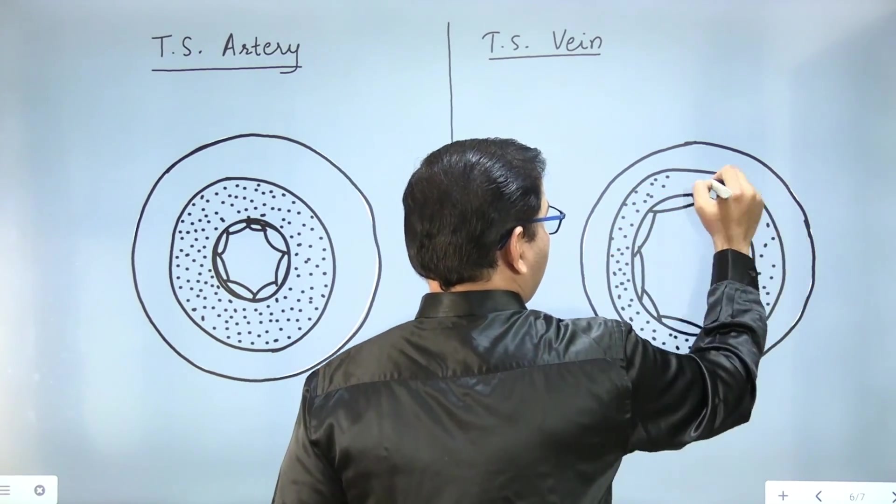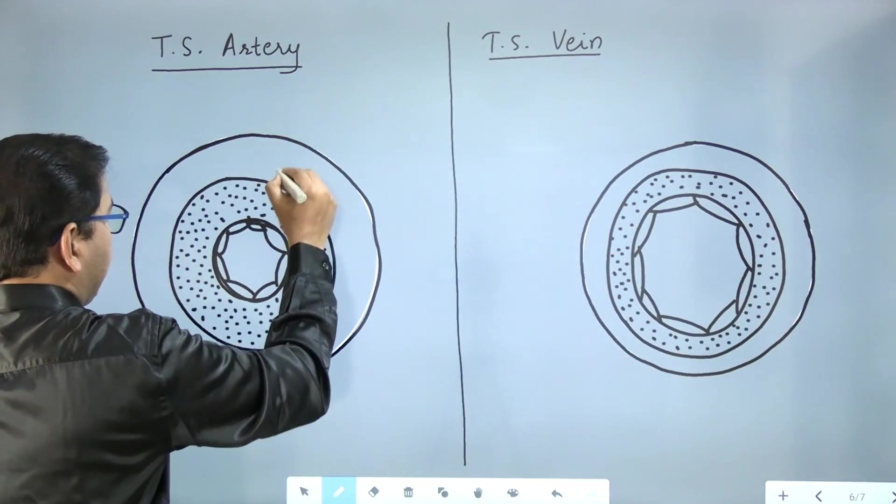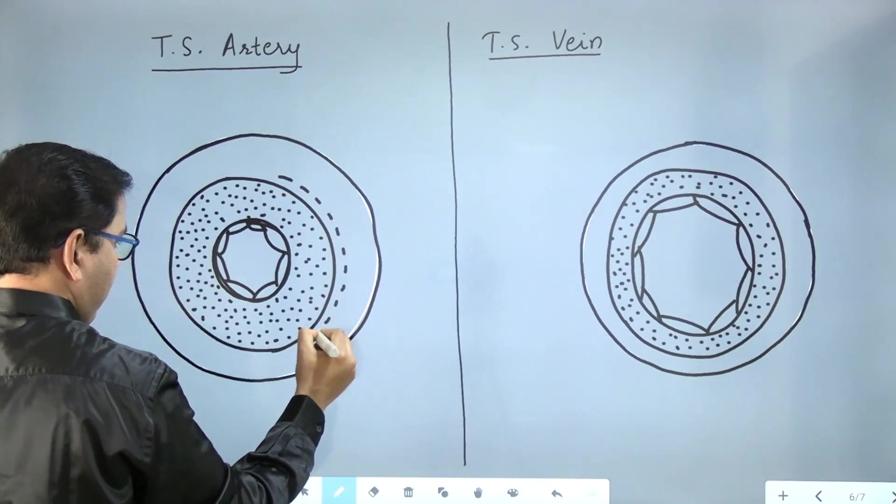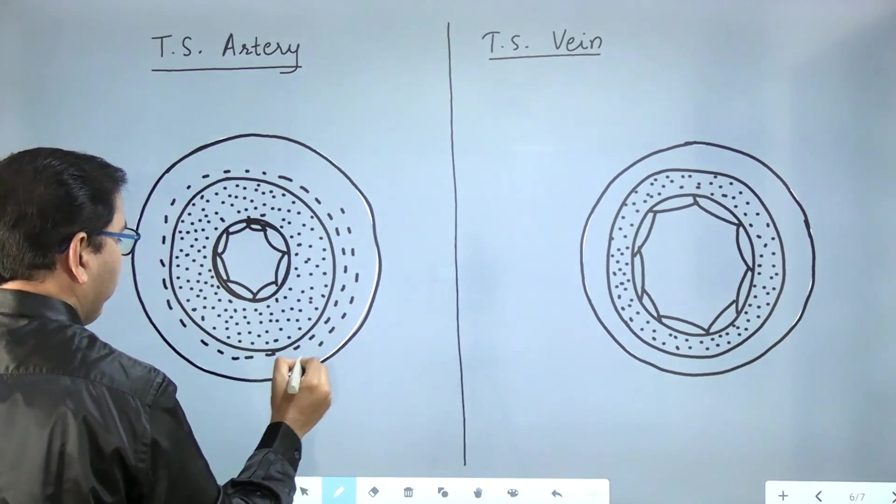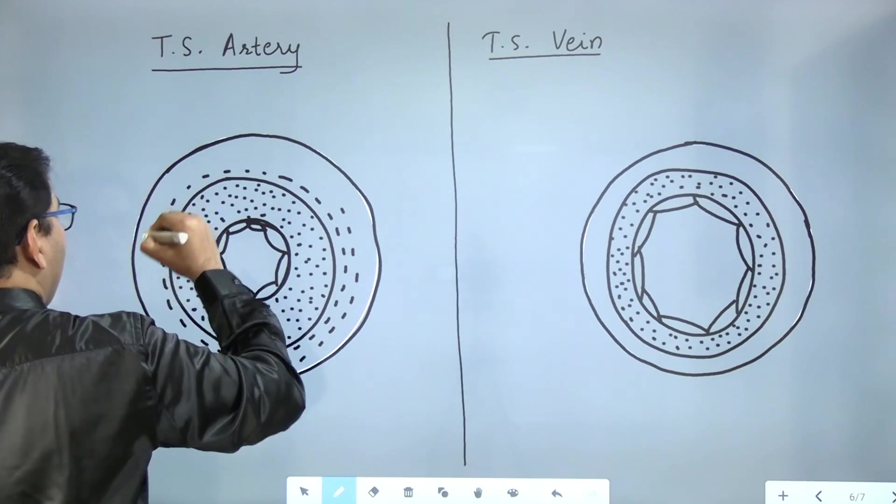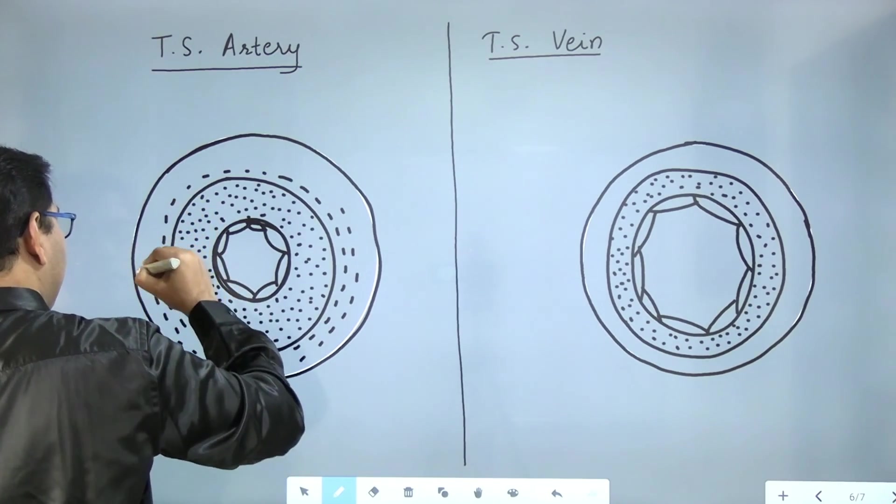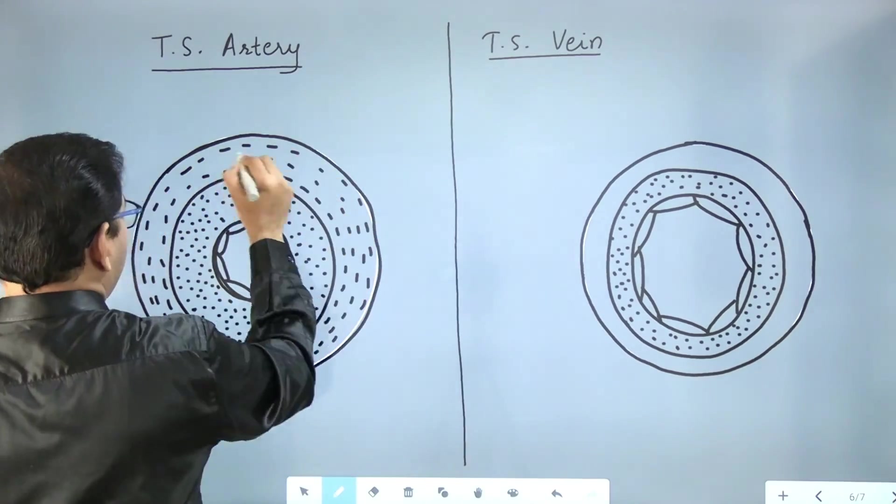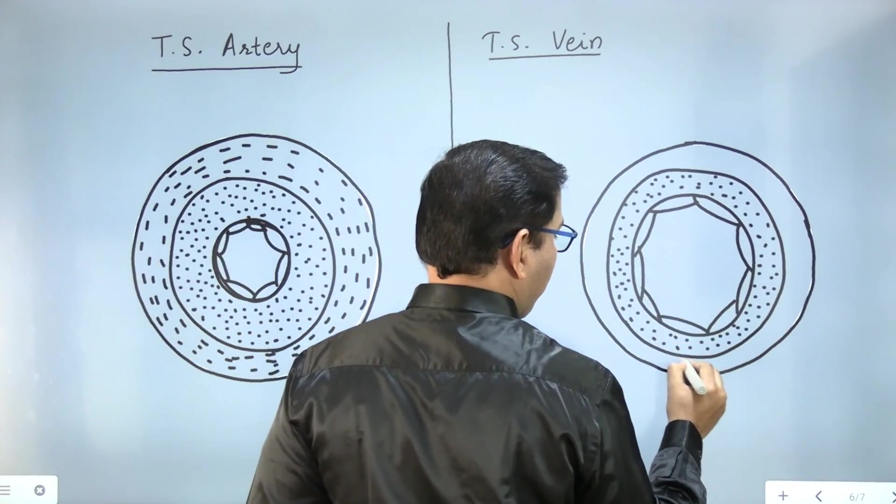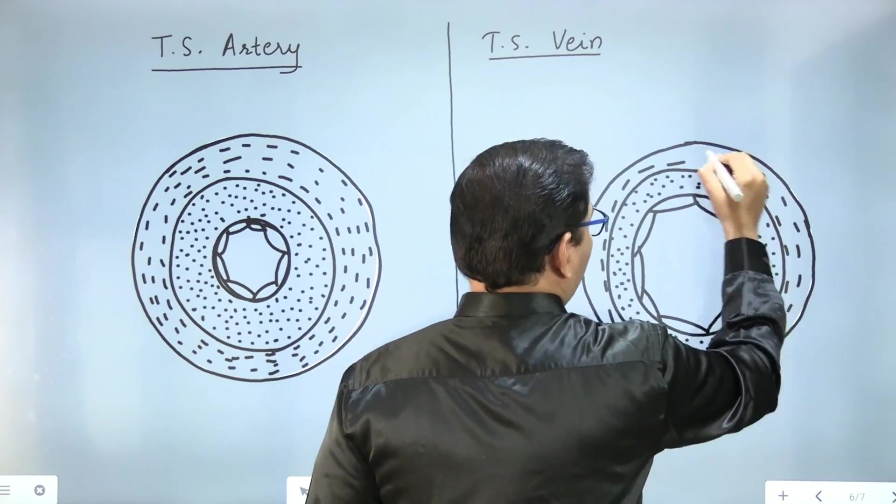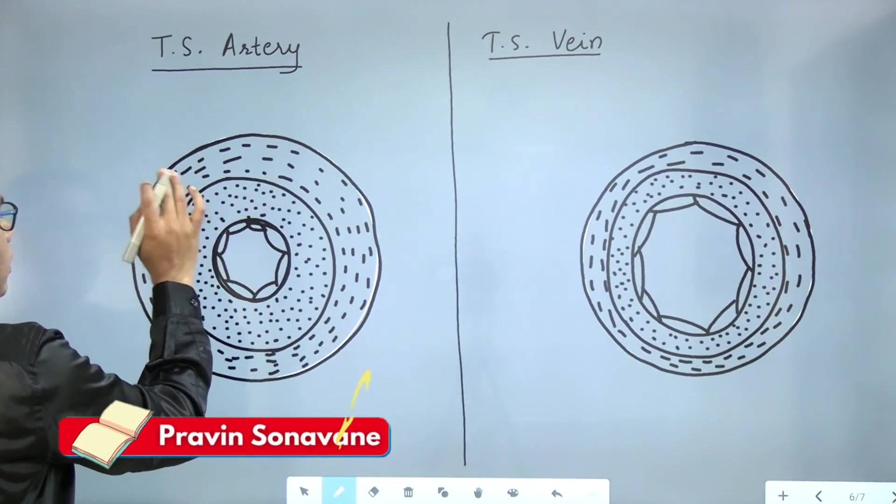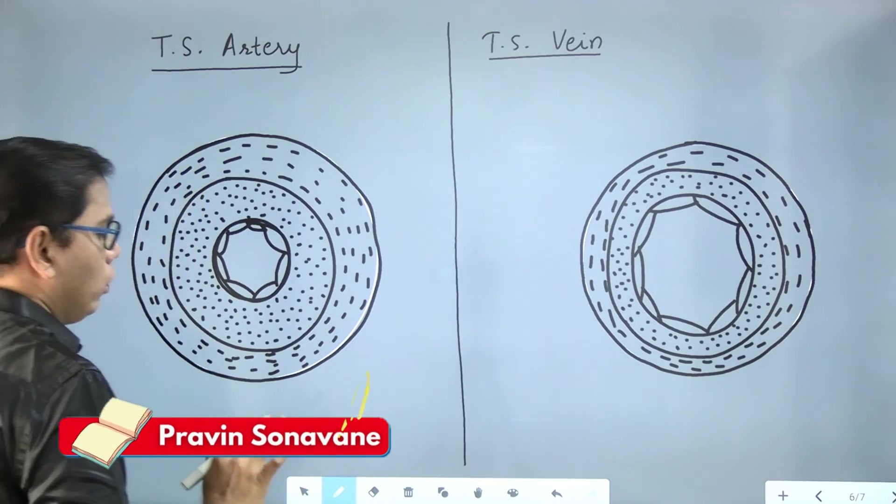And for the outer layer we will draw some dashes so that will differentiate my inner layer and the outer layer. Here also dashes. So now it is clearly visible: innermost layer, middle layer, and the outer layer.